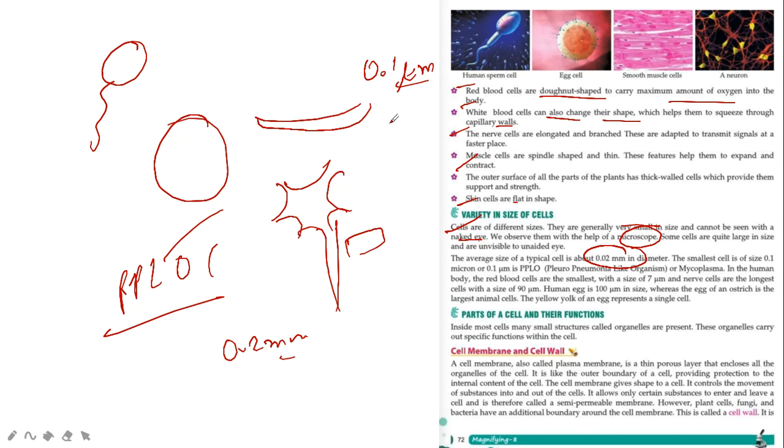But the largest cell is the ostrich egg cell. Right? In the human body, the RBCs are smallest with the size of 7 micrometers, and the nerve cell is the longest with the size of 90 micrometers. Human egg is 100 micrometers in size, whereas the egg of ostrich is the largest animal cell. The yellow yolk of an egg represents a single cell.